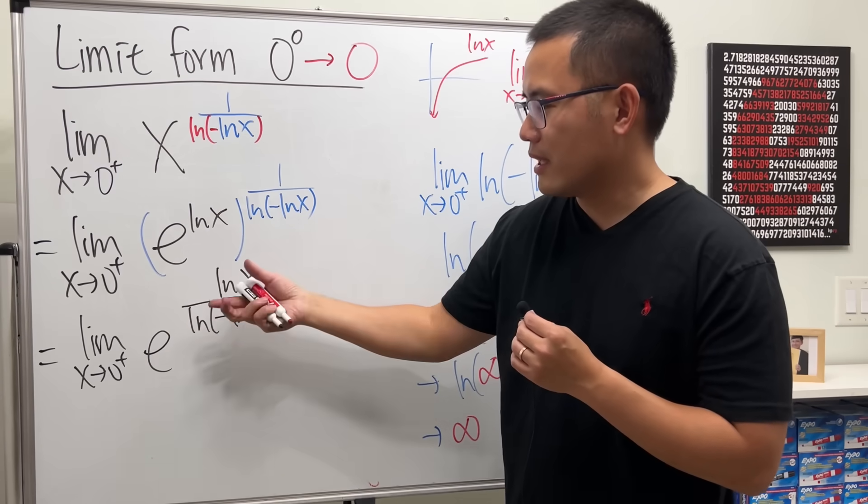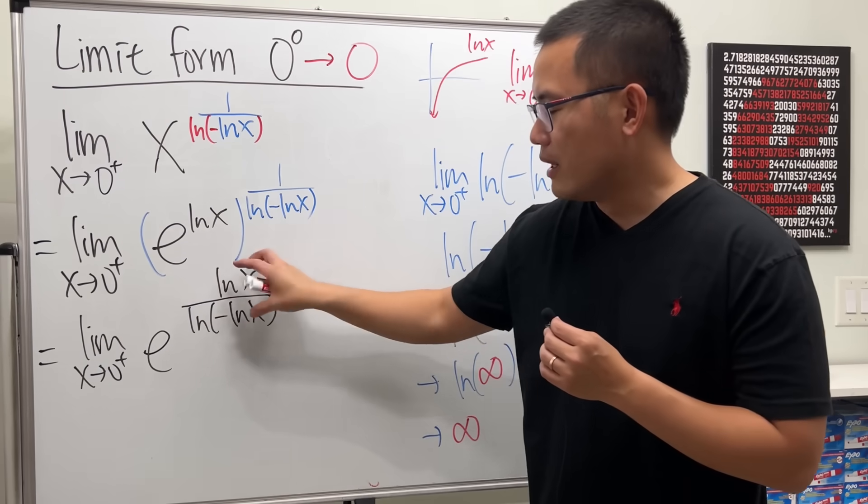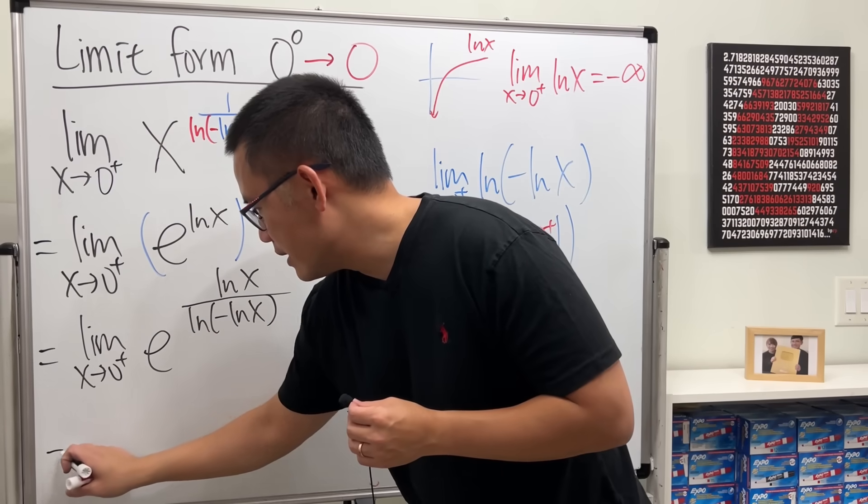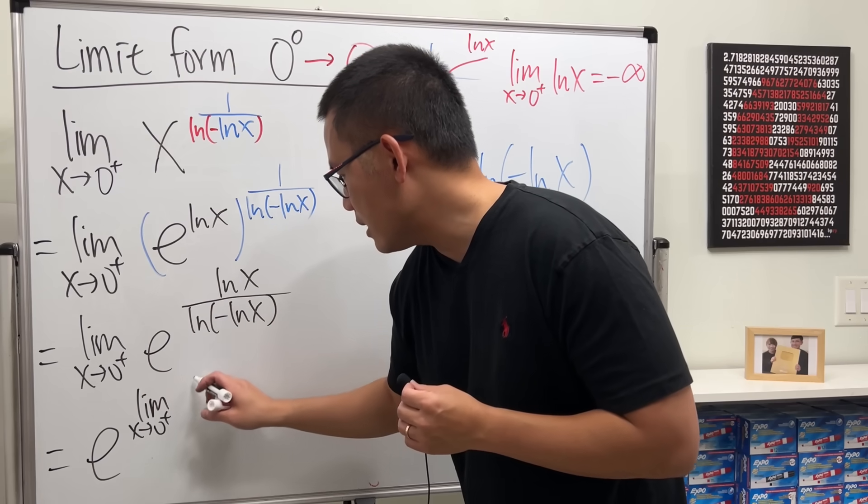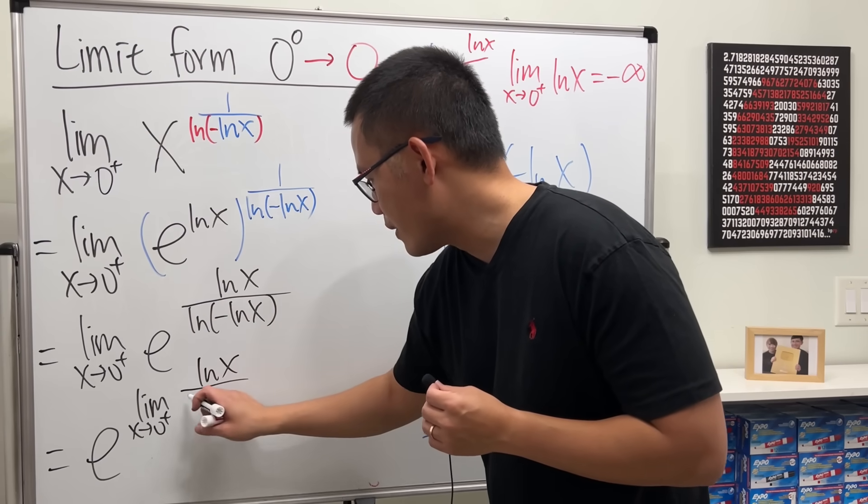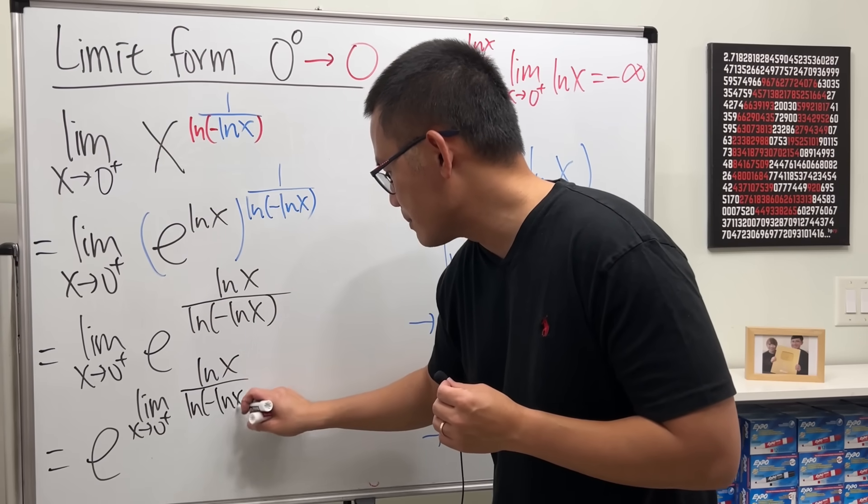Because e to the whatever is continuous, we can just take the limit of the power. So this right here is the same as saying e to the limit as x approaching zero plus of lnx over ln of negative lnx power.